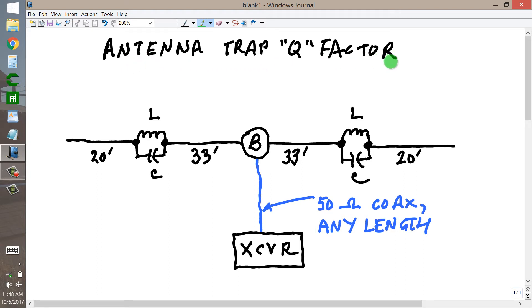What you're looking at here is just an example of a trap dipole antenna fed with coaxial cable, a balun coil at the center, 33 feet on either side, a dipole antenna, so it would be resonant at 40 meters.